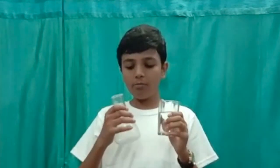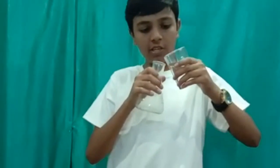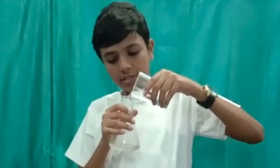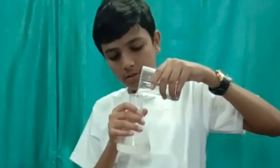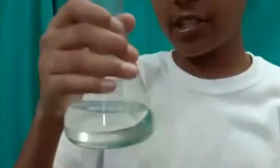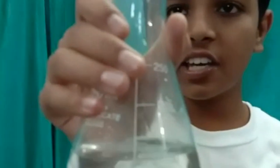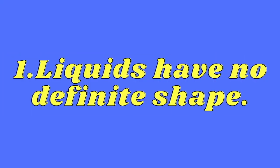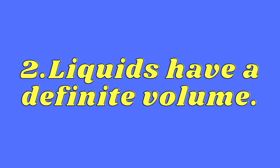Now, what about their volume? In this glass I have 100 ml of water, and now I am going to transfer this into a conical flask. As you can see, the water remains 100 ml. From the above demonstration, we can conclude that liquids do not have a definite shape but they do have a definite volume.